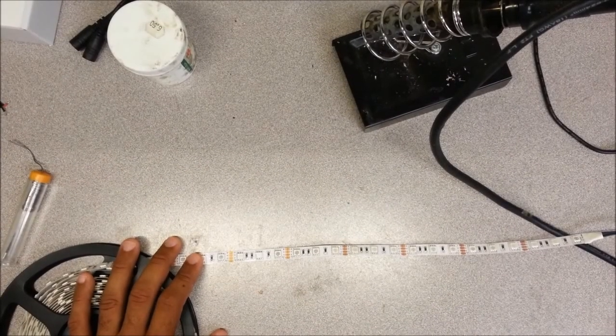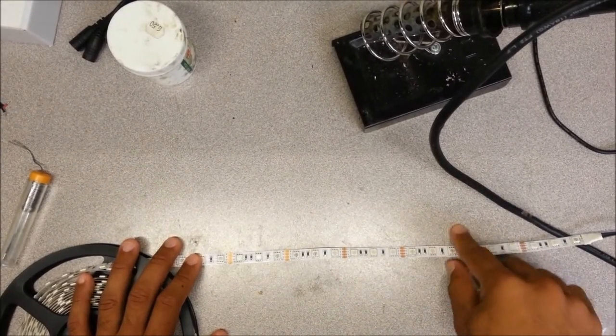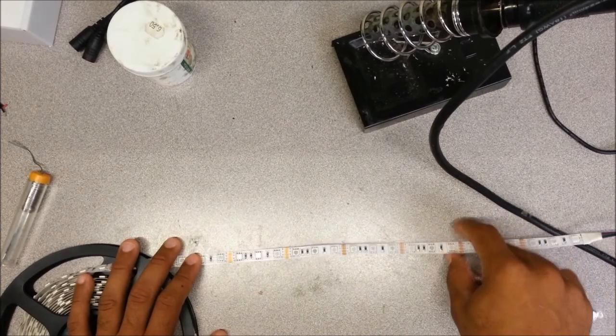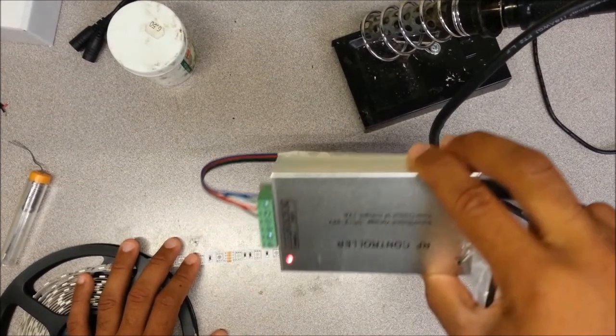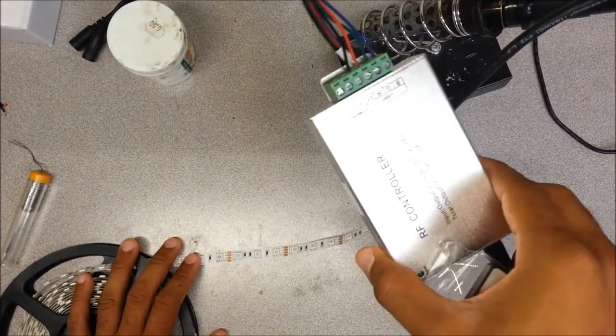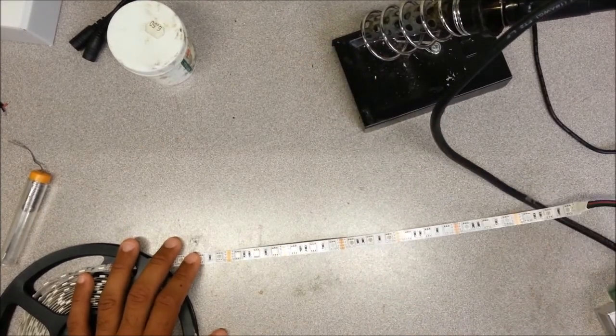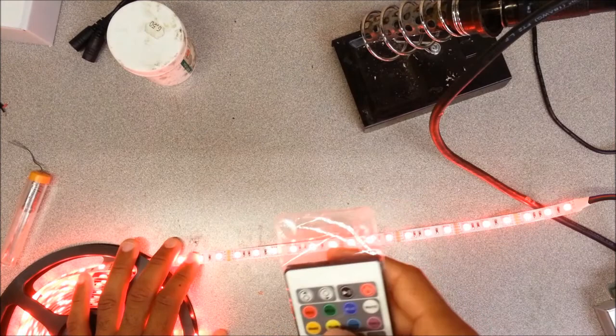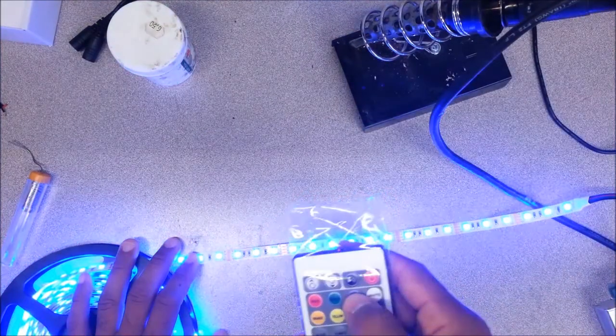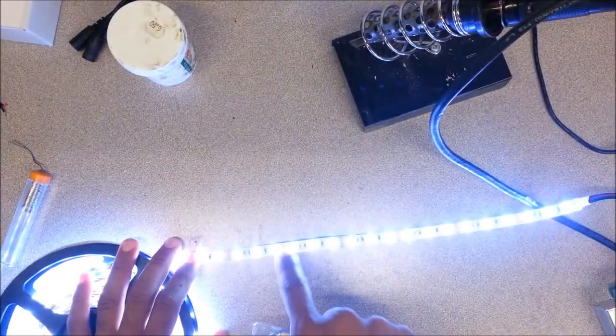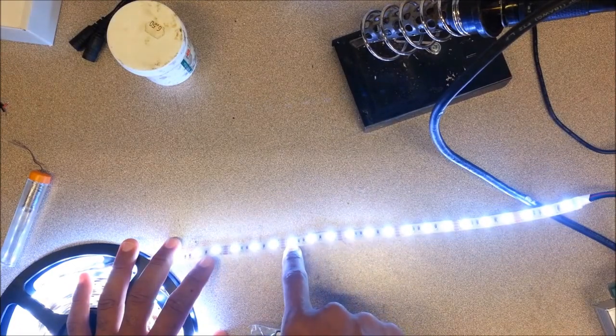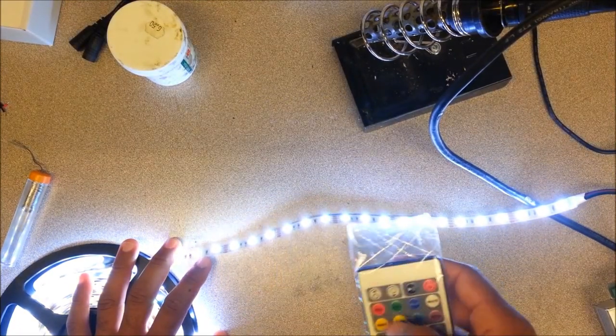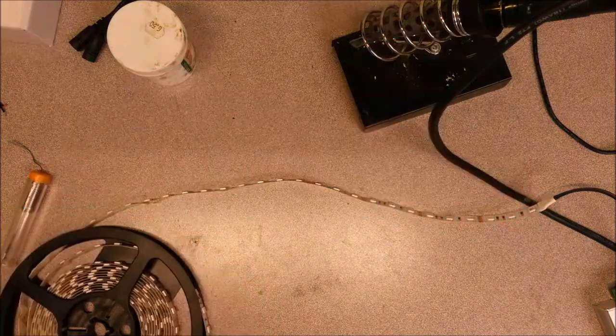In this video we're going to show you how to solder two pieces of 5050 RGB strip together and connect it to an RF controller. RGB stands for red, green, blue, and basically what it means is that you can do many different colors within a single diode of LED. So let's get started.